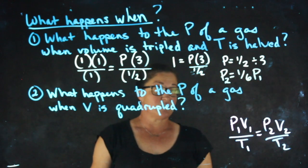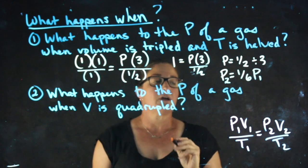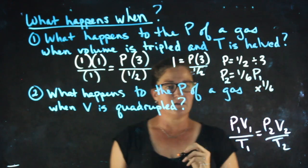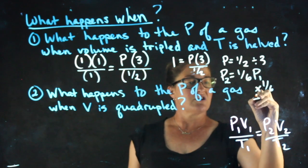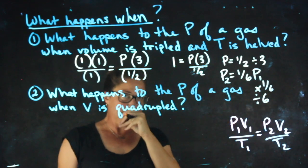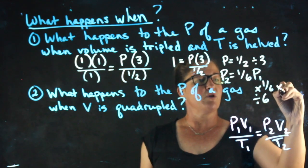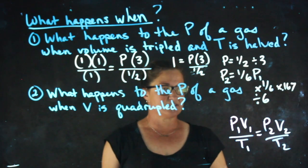Now the ways you can express your answer, that's one choice. You can say that the new pressure is times one sixth. You can say the new pressure is divided by six. Another choice you could say is it's times 0.167, which is one sixth as a decimal.